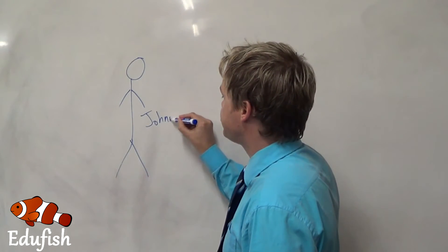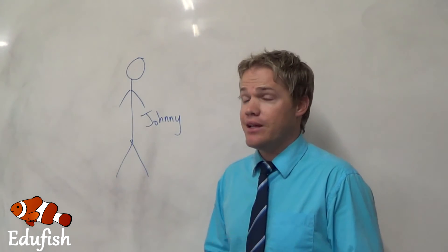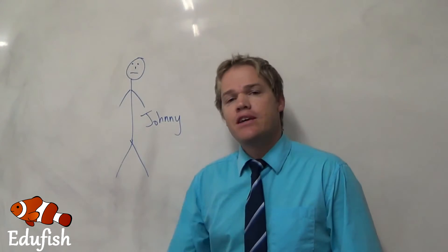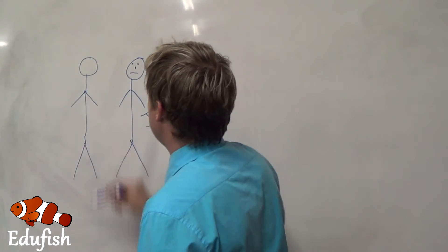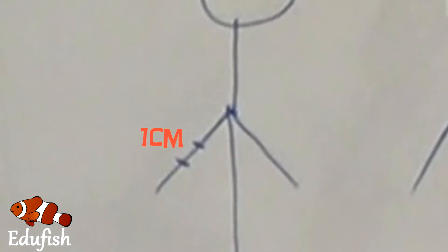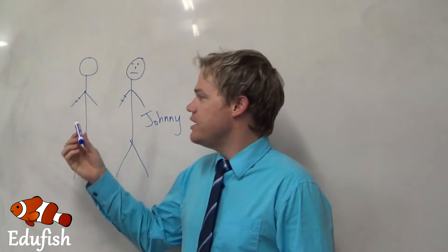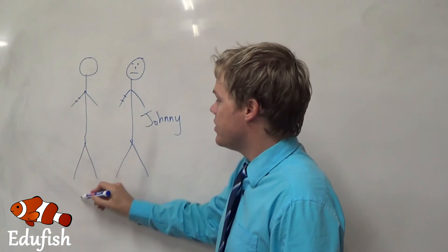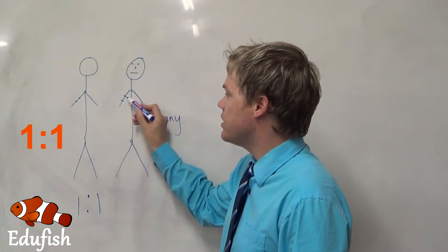Let's just write his name here — Johnny. We get an artist and we say, listen, we want a statue of Johnny. He's been the geek of the week; he doesn't know whether he should be excited about it or not. So Johnny keeps a straight face and this artist comes in and makes a statue exactly the same size. Now, if we take a ruler and measure one centimeter on the statue's arm, we will find it is exactly the same distance on Johnny's arm. In other words, one centimeter on the statue represents one centimeter on Johnny. So the scale for the statue would be one to one.